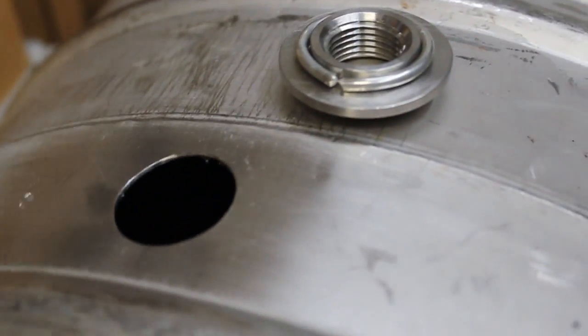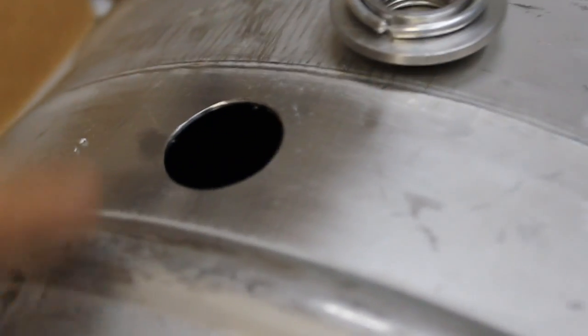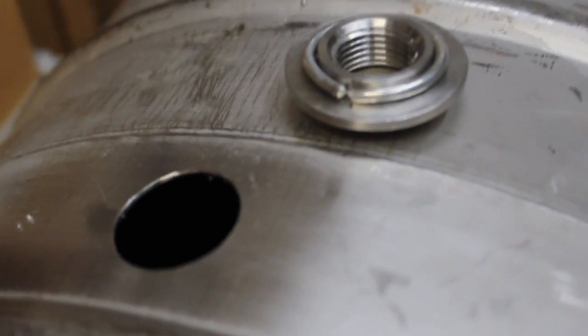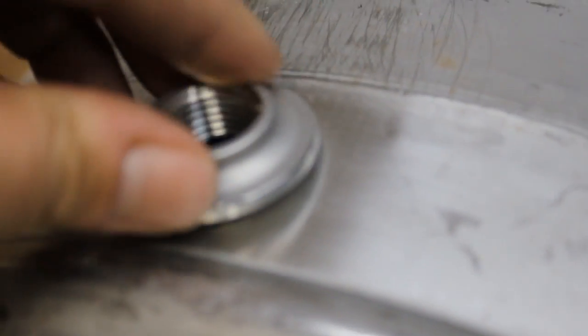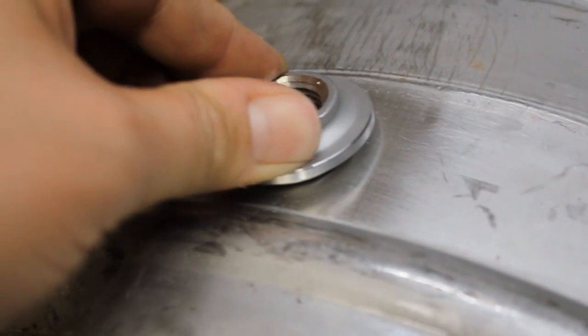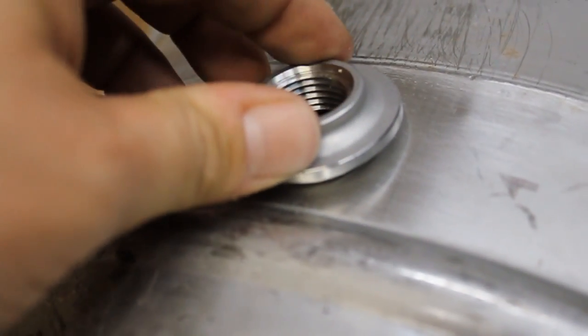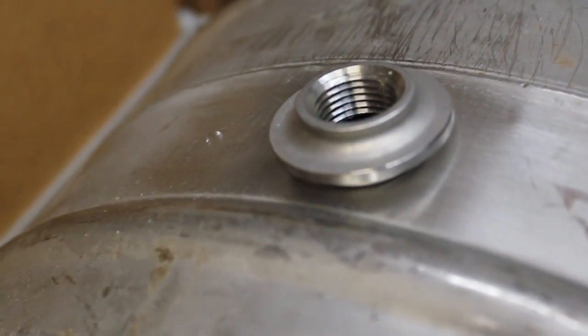Then you're going to use some Harris Stay Clean Liquid Flux. You're going to apply flux to both the keg surface here as well as the back of this. Once you have that flux on there, you flip this over and you put this in that approximate area where the hole is.